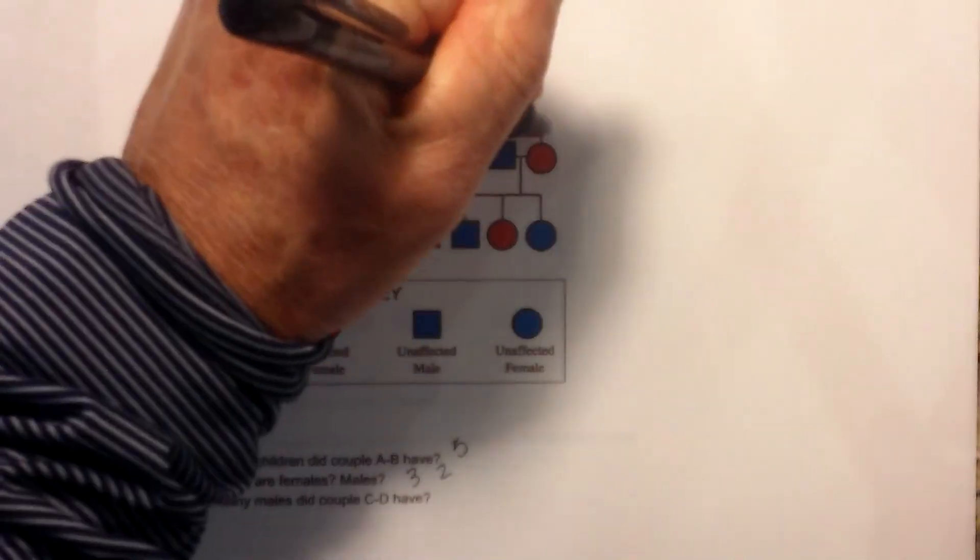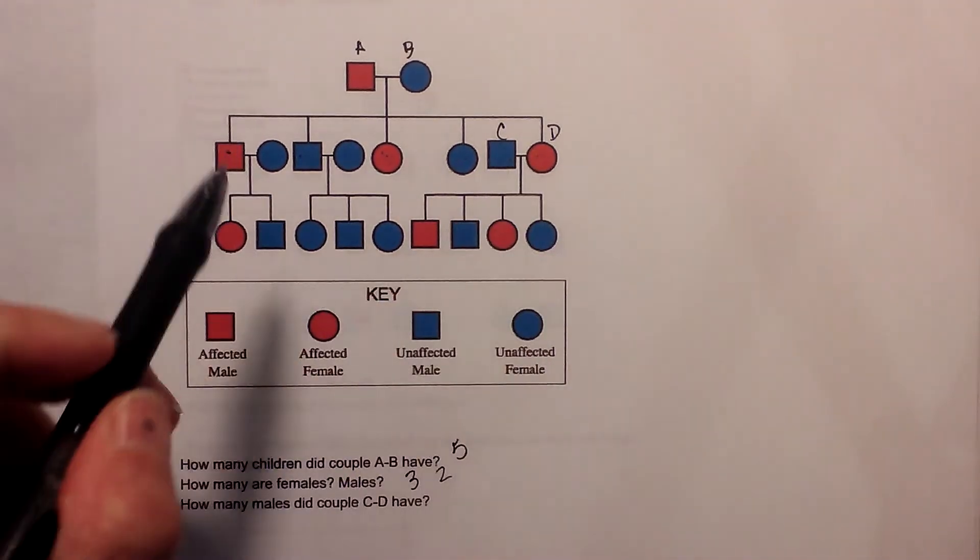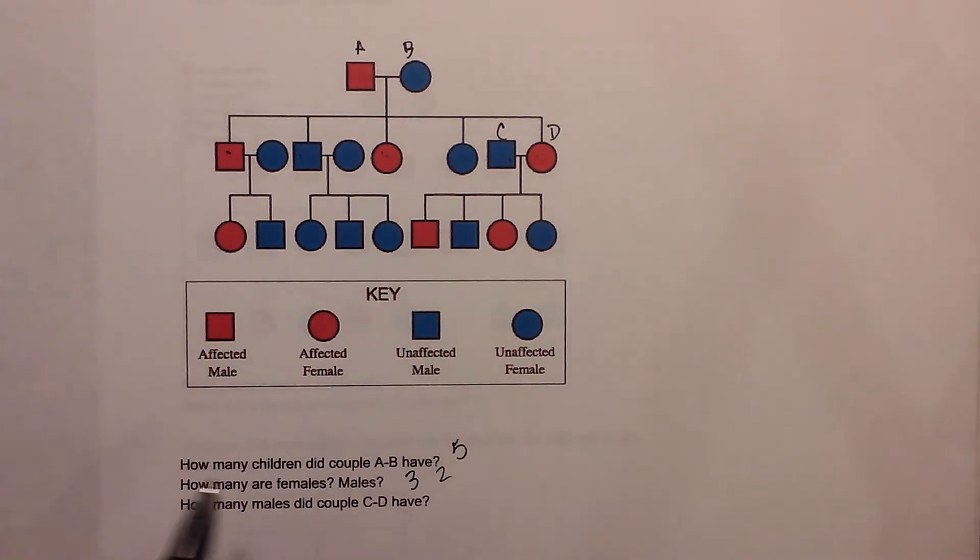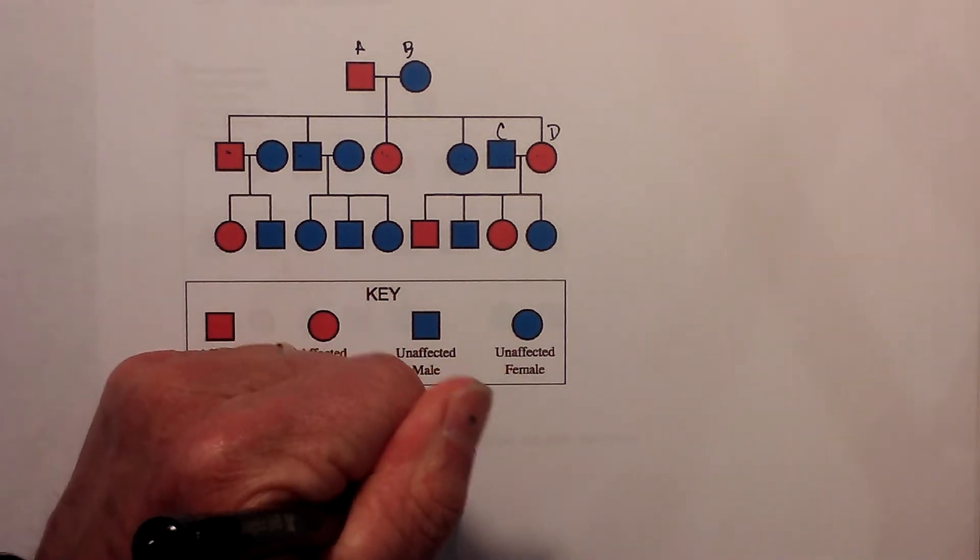Now let's look at another one. Let's say this is CD, couple CD. We know they're married because you have a line in between them. And how many children did couple CD have? They have 1, 2, 3, 4 - 2 boys and 2 girls.